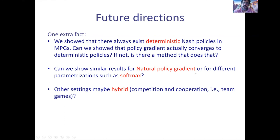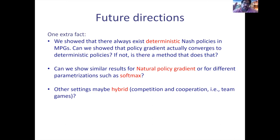There are settings called team games: two teams compete with each other — zero-sum between teams — but inside each team there are many players who each independently receive the team's reward. So inside the team they cooperate, the teams compete with each other. This is a hybrid setting — can we show similar convergence results there? We don't know but we're interested to work on this, and with this I'm done. Thank you for your attention.